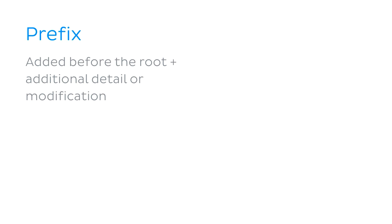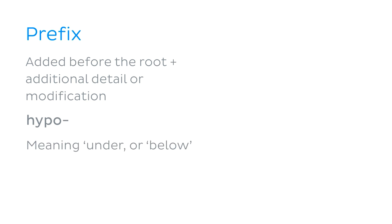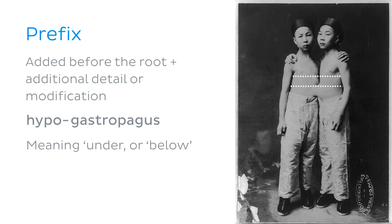The prefix is a word part added before the root to give additional detail or modification. Take the example 'hypo,' meaning under or below. We can add it to our previous term to get 'hypogastropagus' — twins conjoined at the hypogastrium, or below the stomach.